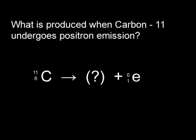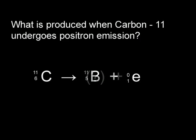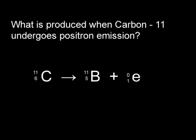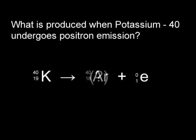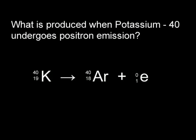How does carbon-11 undergo positron emission? It turns into boron-11. How does potassium-40 undergo positron emission? It turns into argon-40. Notice the atomic number goes down by one, but the mass number stays the same.